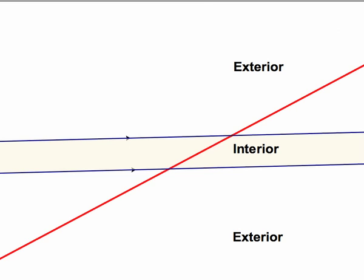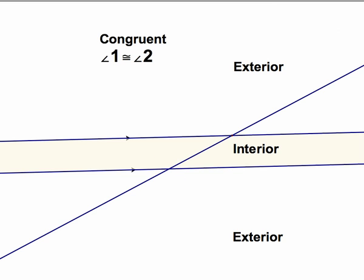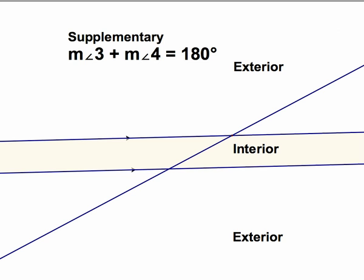A transversal crosses parallel lines to form congruent corresponding angles, congruent alternate interior angles, congruent alternate exterior angles, but same side interior and same side exterior angles are supplementary — they sum to 180 degrees.